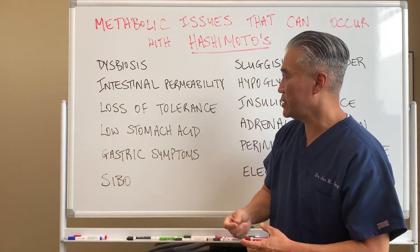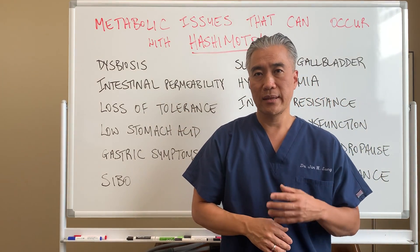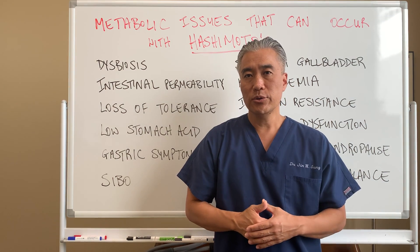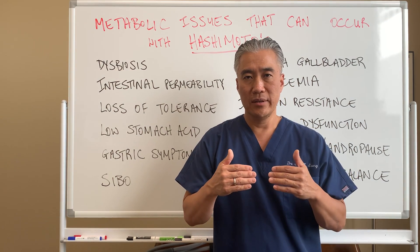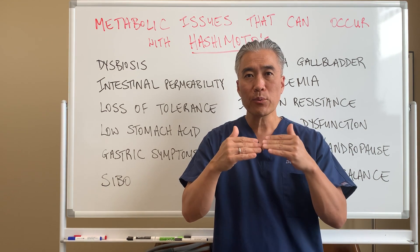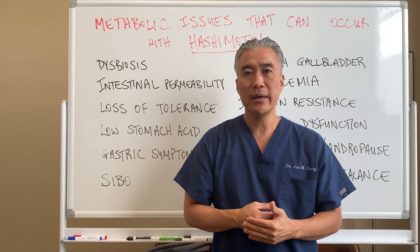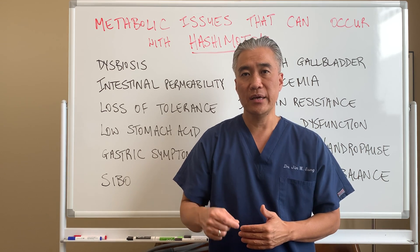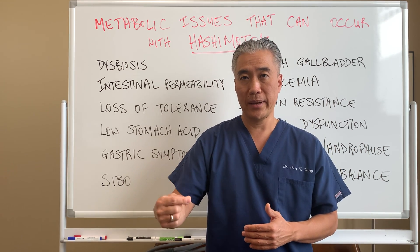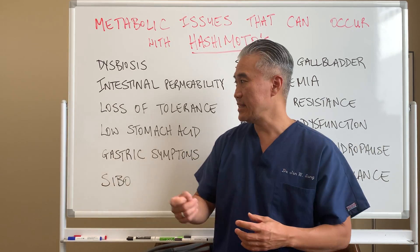Another factor is intestinal permeability. When you have long-standing issues with food sensitivity or antibiotics, you can develop gaps in these microvilli-like junctions where large food proteins can cross into the bloodstream and create inflammation. Inflammation impacts thyroid and thyroid impacts inflammation, causing more problems with autoimmune disease.